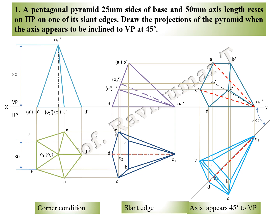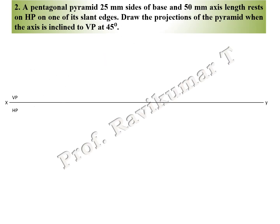Next problem: same pentagonal pyramid, same slant edge condition, but the word 'appear' is absent in the problem. If 'appear' is absent, it is a with-locus problem — you have to find out the beta angle. To find beta: take the true length, draw a locus line, take the apparent length, cut an arc on the locus line, extend the intersection point to the XY line, and you will get the beta angle.